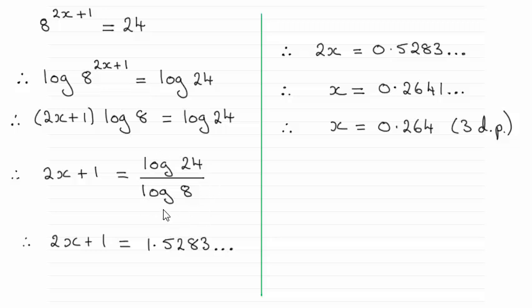Work this out on your calculator or whatever base you may have chosen, you should end up with this result here. And then it's a case of just subtracting 1 from both sides and dividing by 2, and that takes you to the answer x equals 0.264 then to three decimal places.